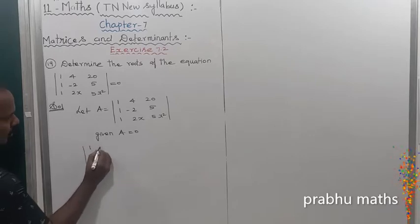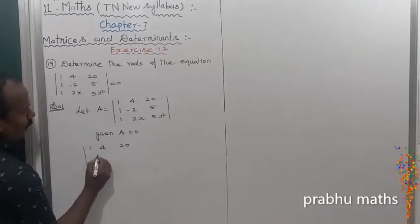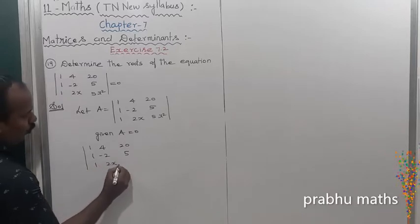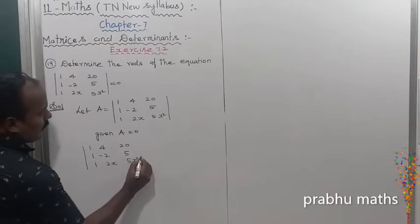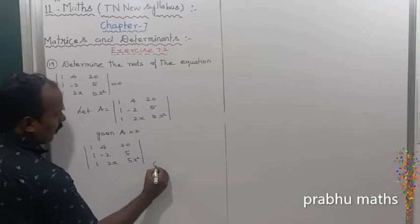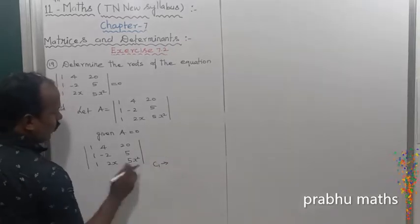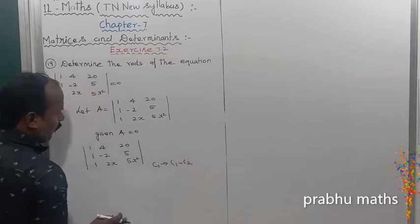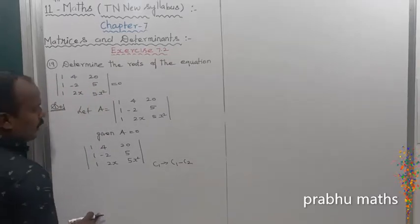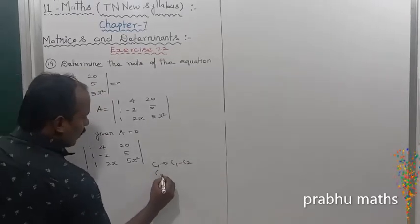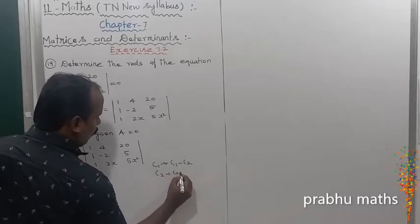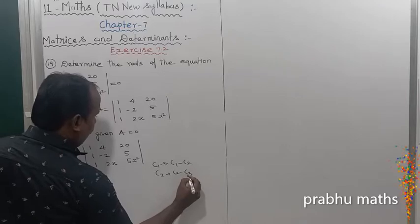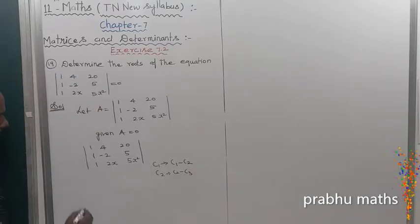Determine the determinant. The matrix has entries 1, 4, 21, minus 2, 5, 1, 2, x, 5, x square. Next, apply column operations: C1 tends to C1 minus C2, and C2 tends to C2 minus C3.